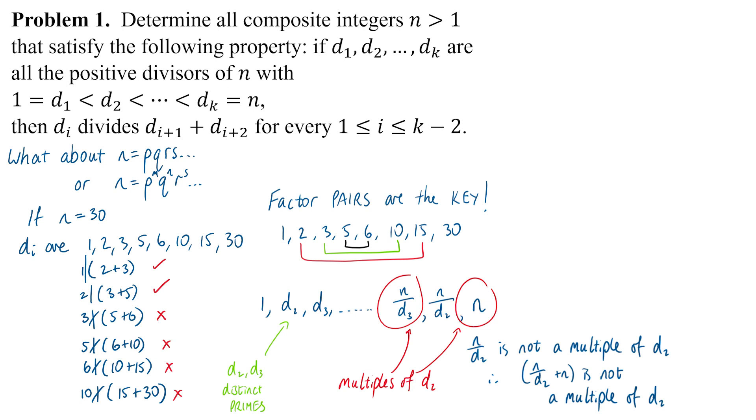The only time it would not apply is if D₁ and D₂ are not distinct primes. For example, you could have your smallest divisors as 1, 2, 4, and 8, and then a larger prime factor like 11 or 13.